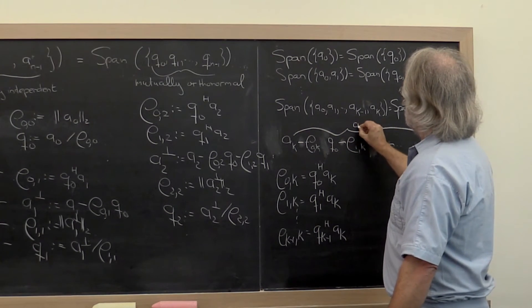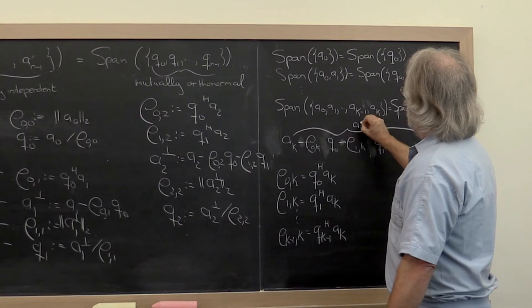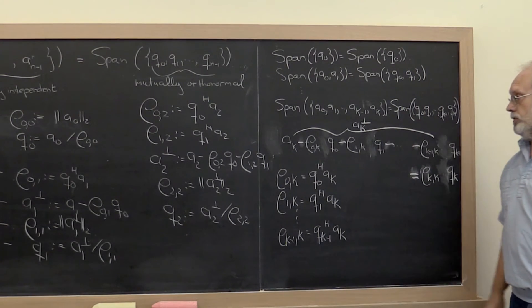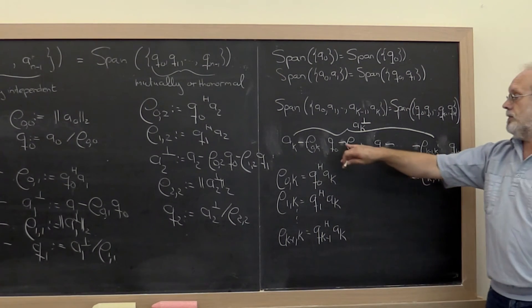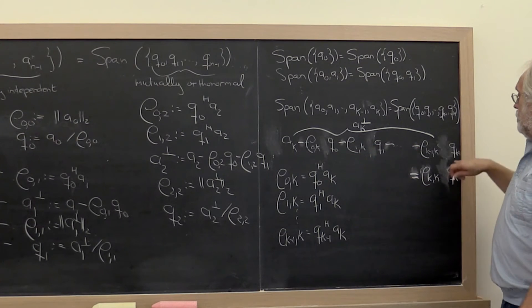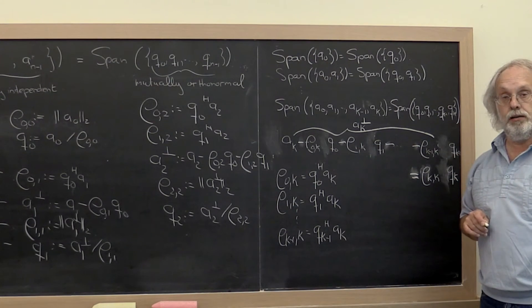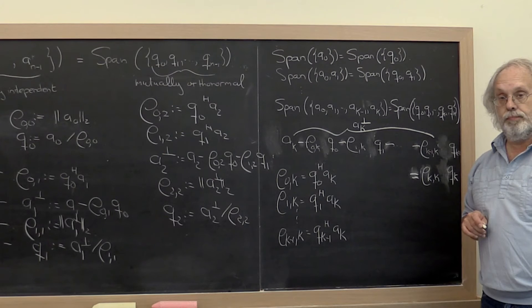We get the component of Ak perpendicular, orthogonal to vectors Q0 through Qk minus 1. Okay?